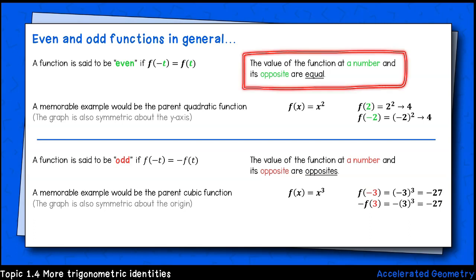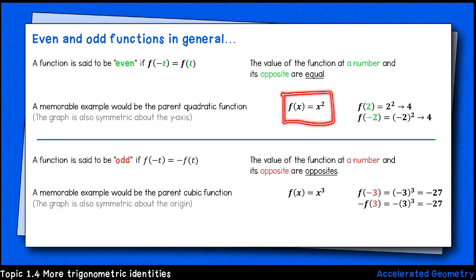For example, a function is said to be even if the output or value of that function at a number and its opposite are equal. Let me show you what I mean. Let's use the parent function f(x) = x² as our example. This is an even function. If we find the value of x² when x equals 2, we get 4. If we find the value of x² when x equals negative 2, that is, the opposite of 2, we still get 4. This shows how we define an even function algebraically.